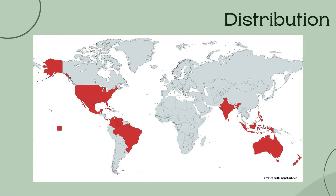Now we move on to the distribution of Acetabularia creniolata. As we can see in this image, all of the countries or areas in red are those where Acetabularia creniolata can be located. There is a relatively wide distribution with individuals found in shallow waters from both temperate and tropical regions. Acetabularia has been found in North America, particularly the United States, the Caribbean Islands, Bermuda, Belize, Bahamas, Barbados, Cuba, Curacao, Jamaica, Puerto Rico, Trinidad and Tobago, and the U.S. Virgin Islands; Central America, namely Mexico and Panama; South America, namely Brazil, Colombia, and Venezuela; Australia and New Zealand; and South Asia, namely Indonesia, and of course here in the Philippines.